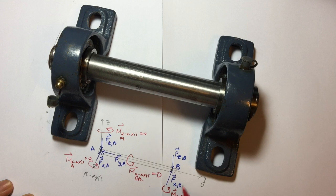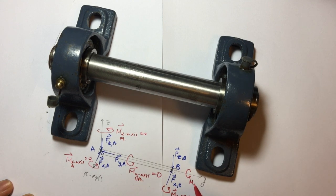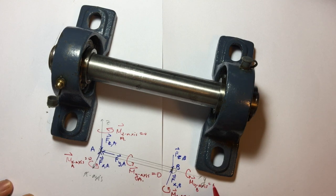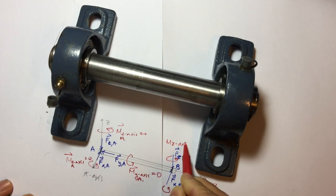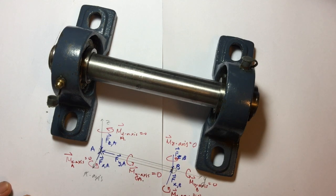The moment about the x-axis at point B is equal to zero. The moment about the y-axis at point B is also equal to zero. And the moment about the z-axis at point B is also equal to zero.